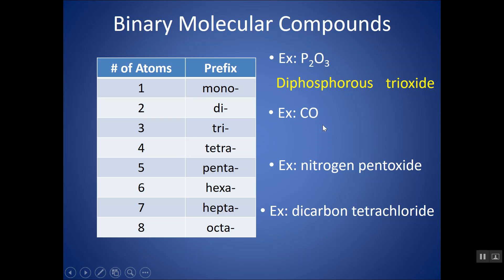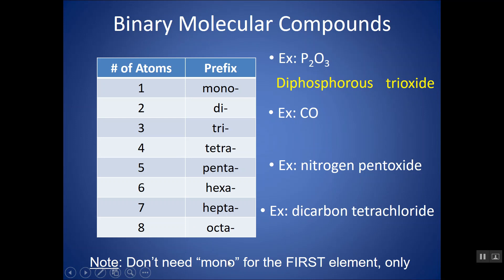An important note: if your first element has a subscript of 1, we can drop the mono. We don't need mono for the first element — only for the first element. Scientists think it sounds odd to start a compound name with mono. For instance, carbon has a subscript of 1 here, so rather than saying monocarbon, we just start the compound name with carbon. We drop that mono on the first element only.